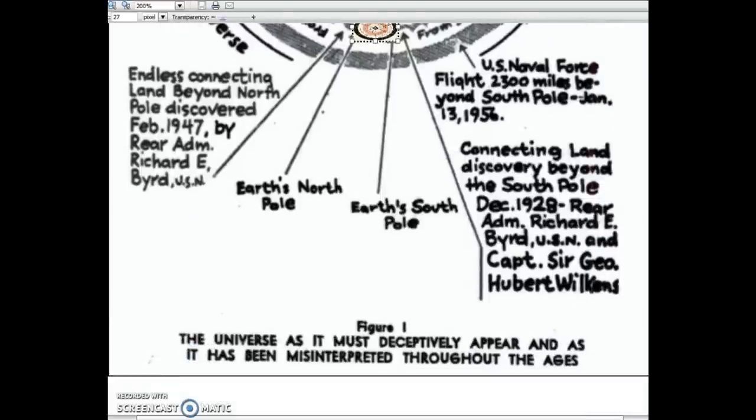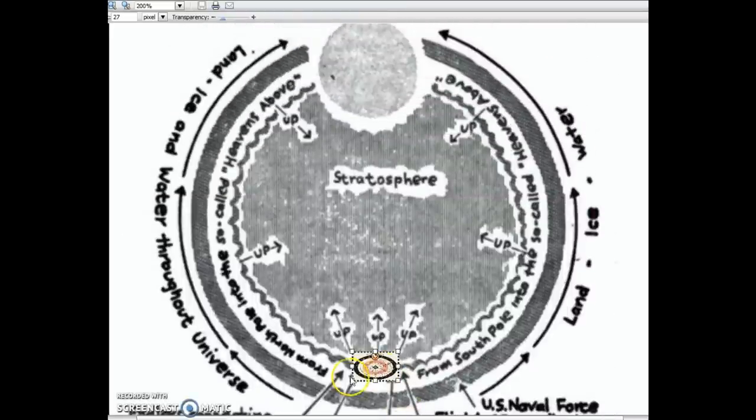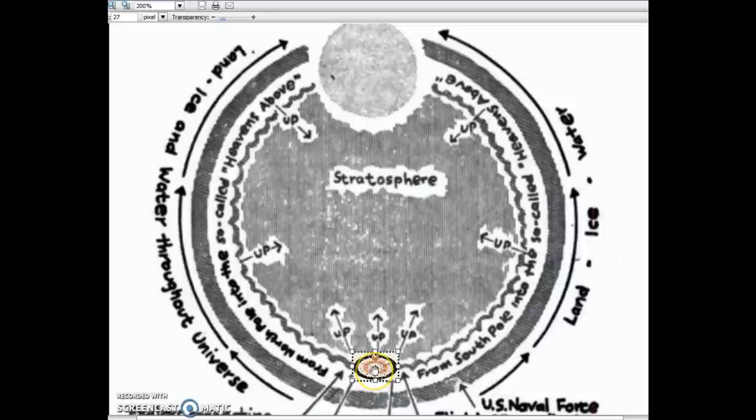That's what I wanted to point out, that on a globe, McMurdo is not 400 miles west of the geographic south pole. It is over 800 miles, so either the book is wrong, or the globe is wrong.